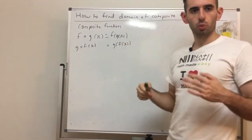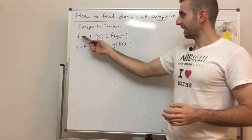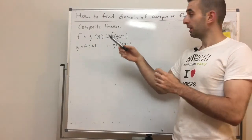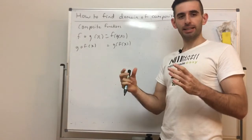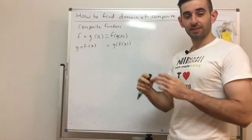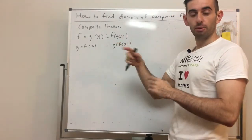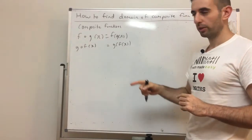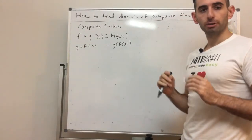So, composite functions — what are they? The notation is f∘g(x) = f(g(x)). A composite function means we take one function and substitute it into the other, replacing x with the actual function. We can also go the other direction: g∘f(x), where we sub f(x) into g.